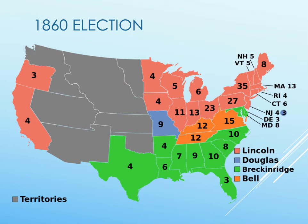This is what hands Lincoln the election. We're going to get to exactly why that happens. Southerners had demanded an endorsement of a federal code to guarantee the rights of slaveholders. Those Southerners don't get it, so they walk out.